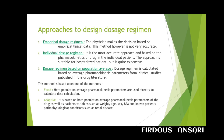Various approaches for designing dosage regimens include: first, empirical dosage regimen; second, individual dosage regimen; and third, dosage regimen based on population average. In the empirical approach, the physician selects a dosage regimen without using pharmacokinetic variables, basing the decision on empirical clinical data, personal experience, and clinical observation. This method, however, is not very accurate.